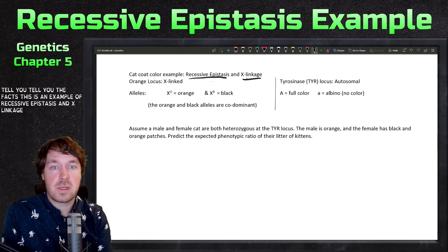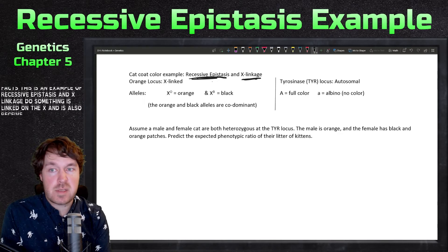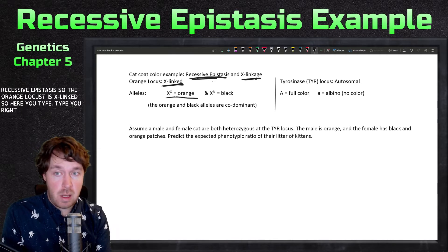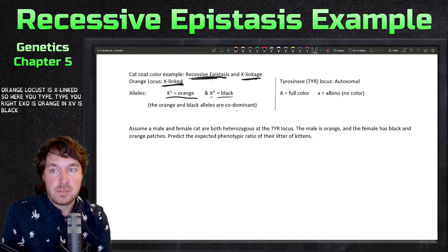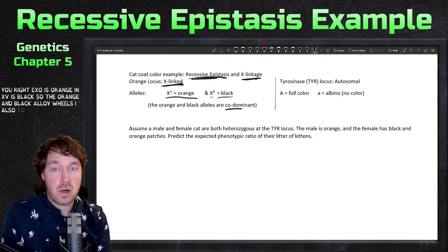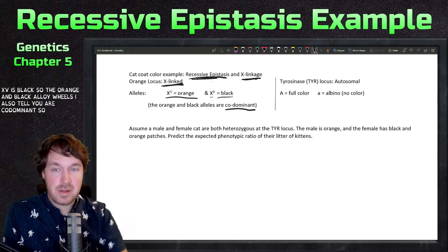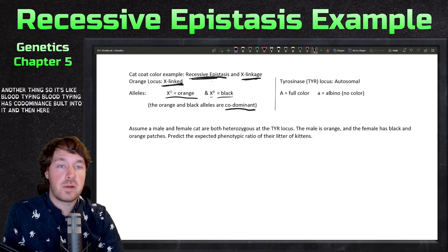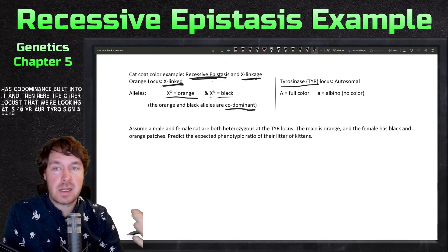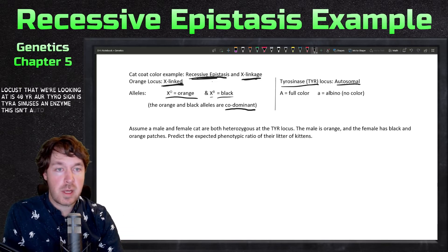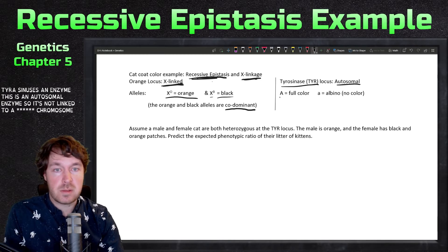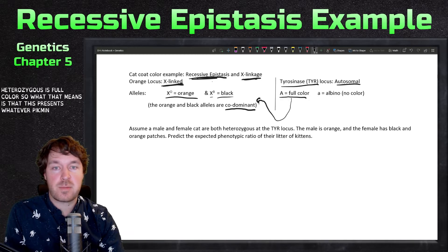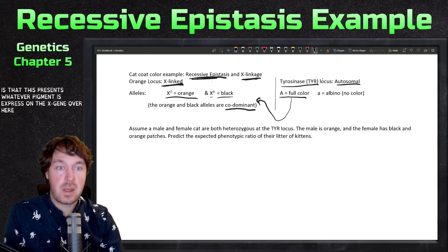So something is linked on the X and it's also recessive epistasis. The orange locus is X-linked, so you write X^O is orange and X^B is black. The orange and black alleles are codominant, so there's another thing - it's like blood typing. Then the other locus we're looking at is for tyrosinase. Tyrosinase is an enzyme, an autosomal enzyme, so it's not linked to a sex chromosome. Homozygous or heterozygous is full color, which means this presents whatever pigment is expressed on the X gene.